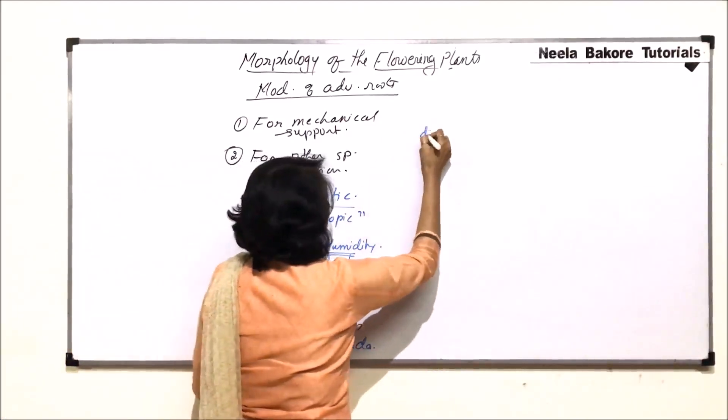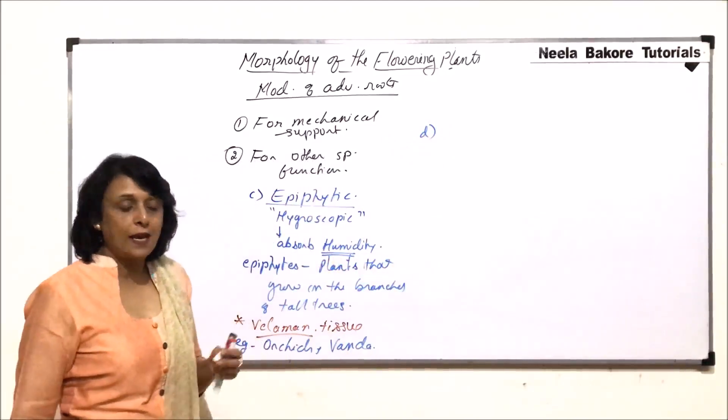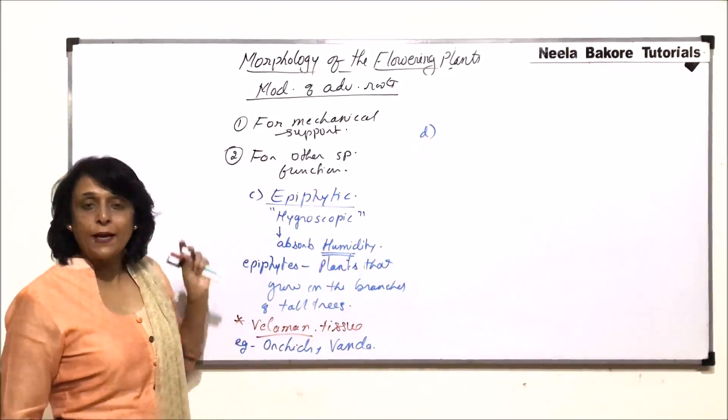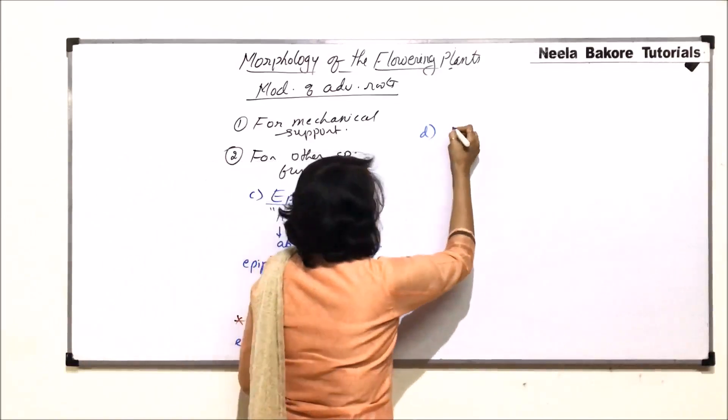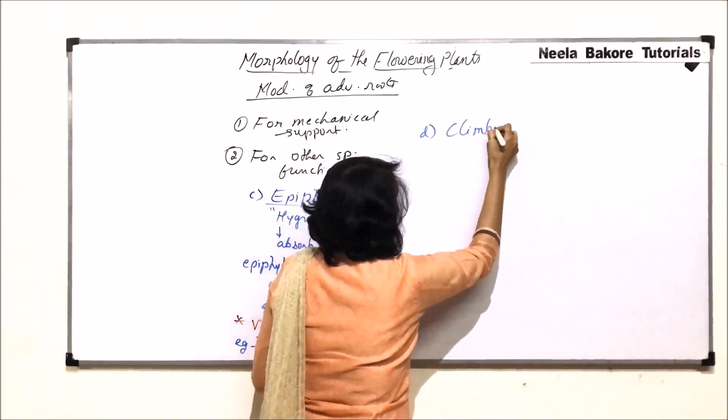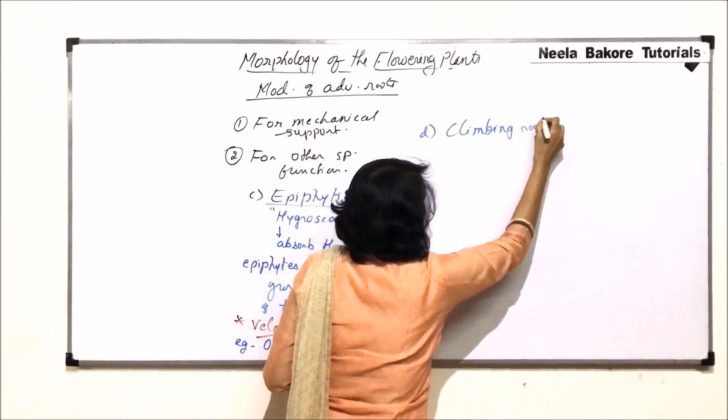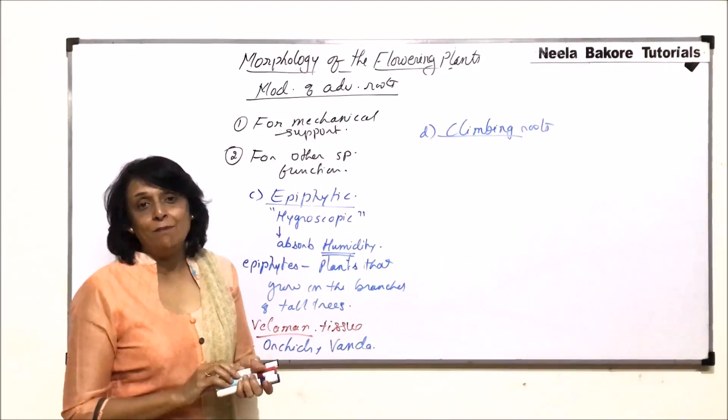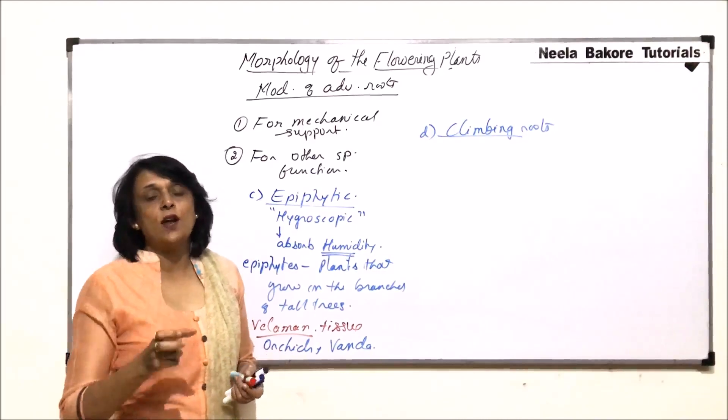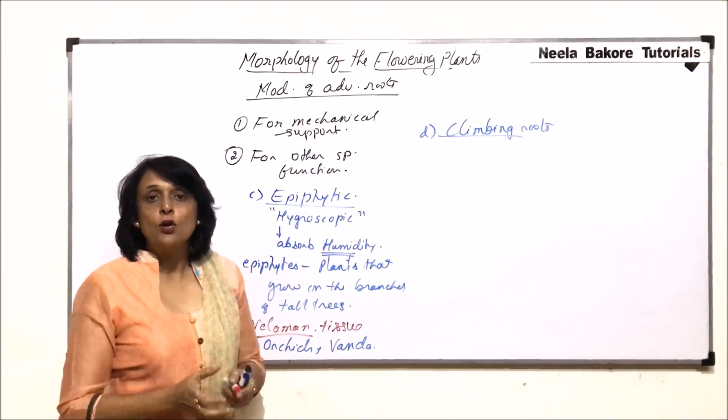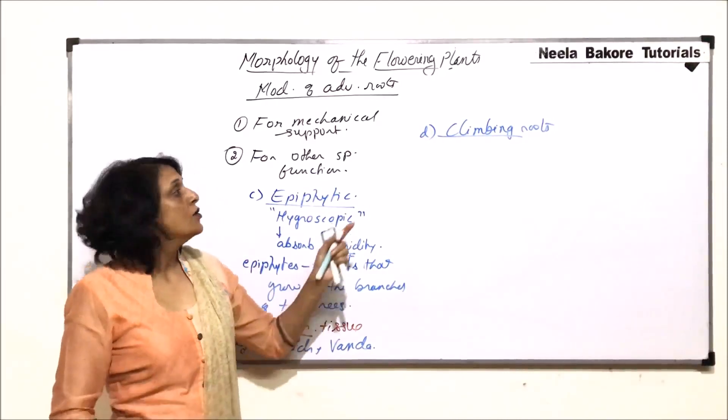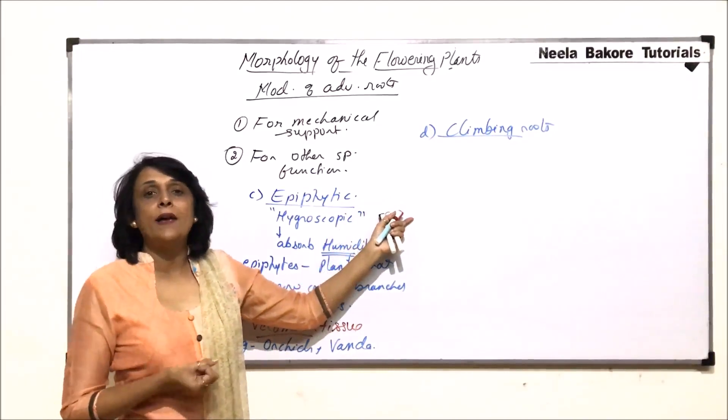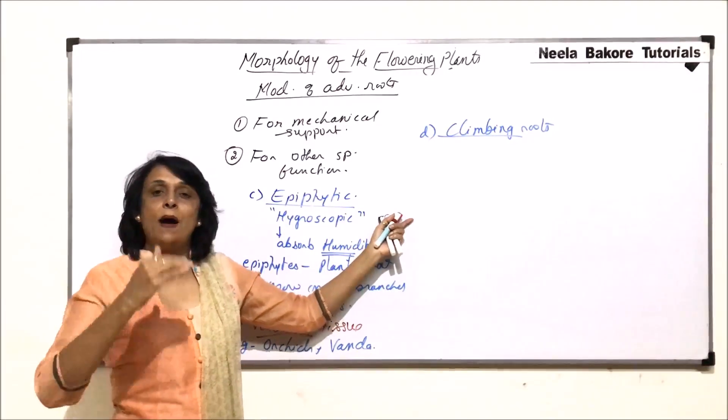The next modification, again a special type of adventitious root, are known as climbing roots. As the name tells us, these roots would help the plant climb. So, here the stem is not that strong to hold the plant upright. So, there would be some structure required for the plant to climb up the support.